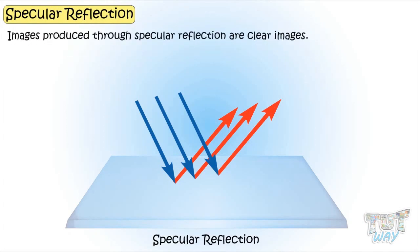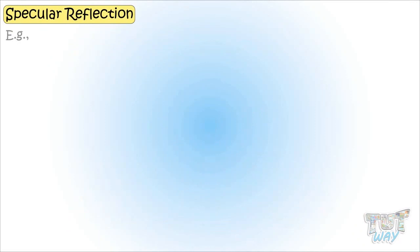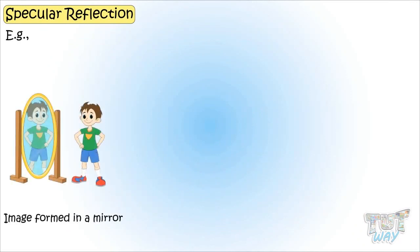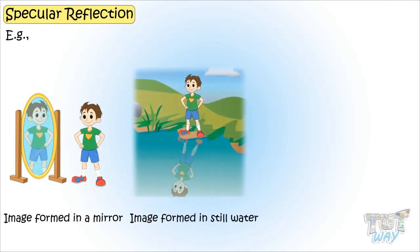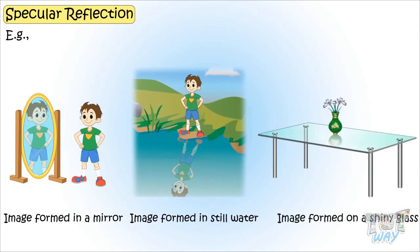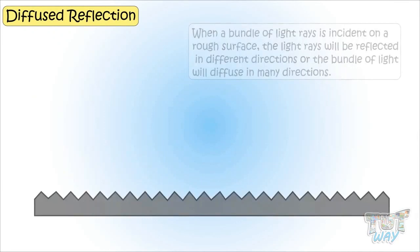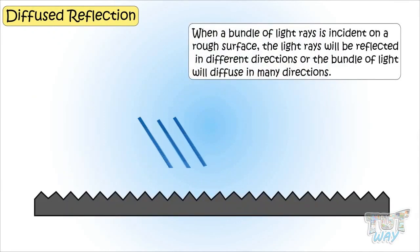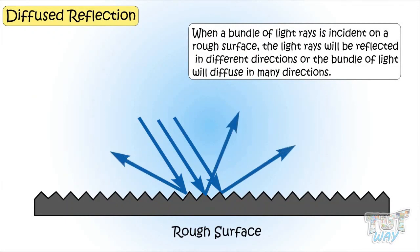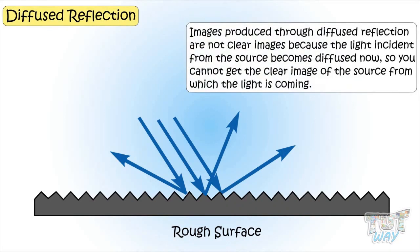Images produced through specular reflection are clear images. Examples include the image formed in a mirror, image formed in still water, and image formed on a shiny glass. In diffuse reflection, the light rays will be reflected in different directions — a bundle of light will diffuse in many directions.